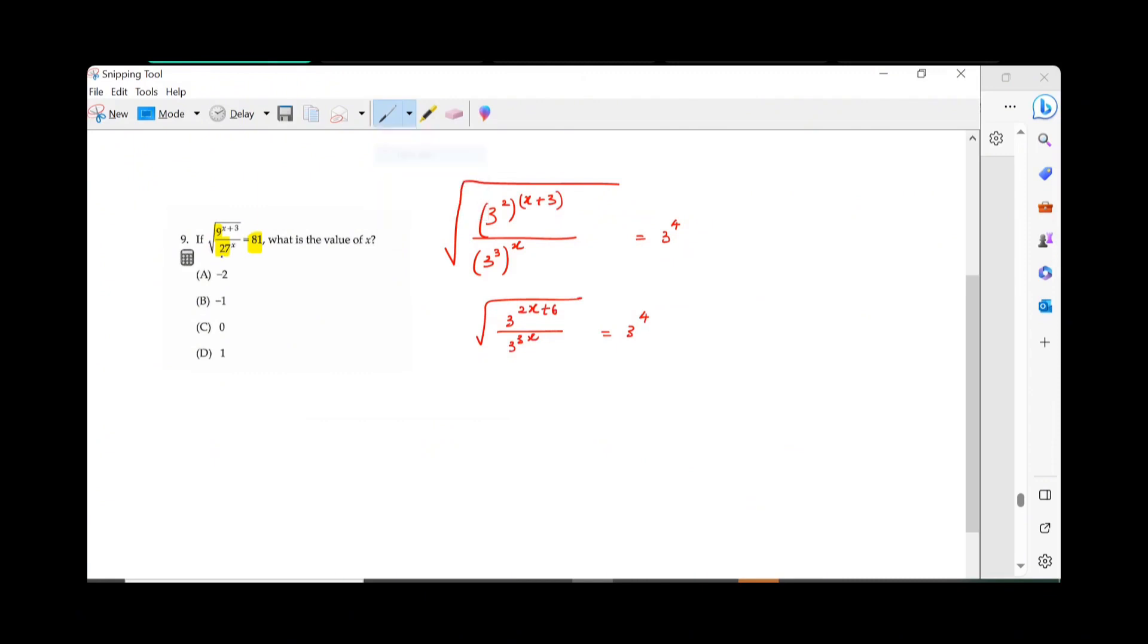So, how do I get rid of the square root? You square on both sides. Right?